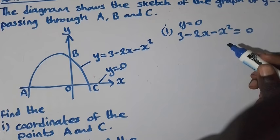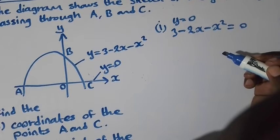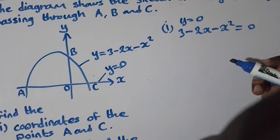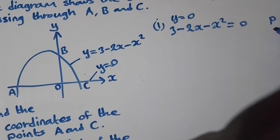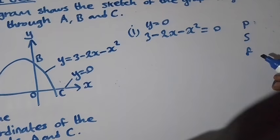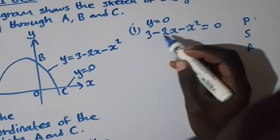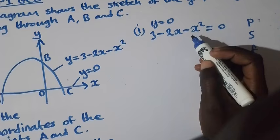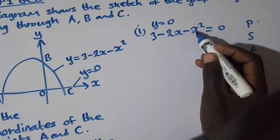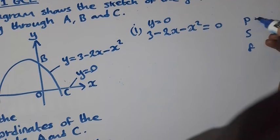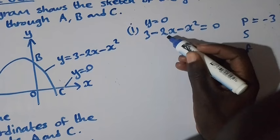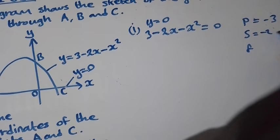We can find the zeros of the quadratic equation using either the quadratic formula or the factorization method. Since this is Paper 1, we shall use the factorization method, applying the product-sum-factor approach. The product is obtained by multiplying the constant by the coefficient of x², which is negative 1, giving us a product of negative 3. The sum is the coefficient of x, which is negative 2.